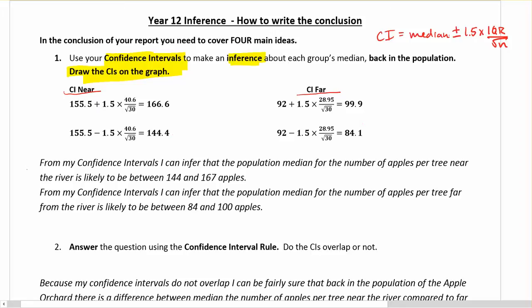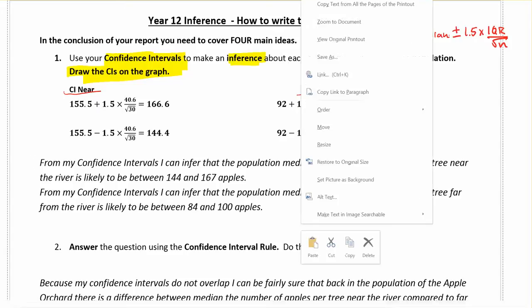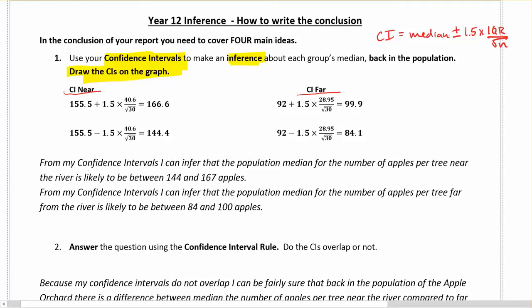So once I've got these I need to interpret them. This is making my inference about where the medians are back in the population. From my confidence intervals I can infer that the population median for the number of apples per tree near the river is likely to be between 144 and 167 apples. Again, round. Don't tell me you're going to have a half-eaten apple hanging from the tree.